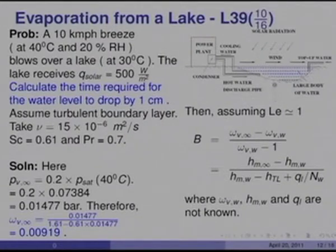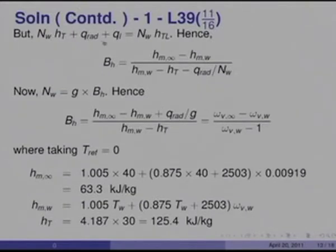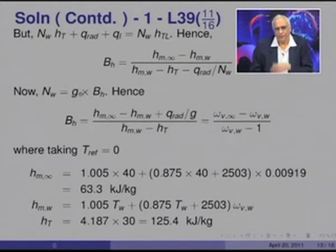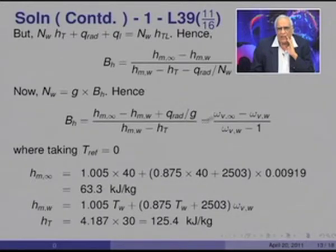Since the lake surface temperature T_w is unknown, omega_V_w, H_m_w, and Q_L are also unknown — three unknowns requiring iteration. The energy balance in the neighboring phase gives B_h = (H_m_infinity − H_m_w + q_rad/g) / (H_m_w − H_TL). Taking T_ref = 0: H_m_infinity = 63.3, and H_TL = 4.187 × 30 = 125.4.